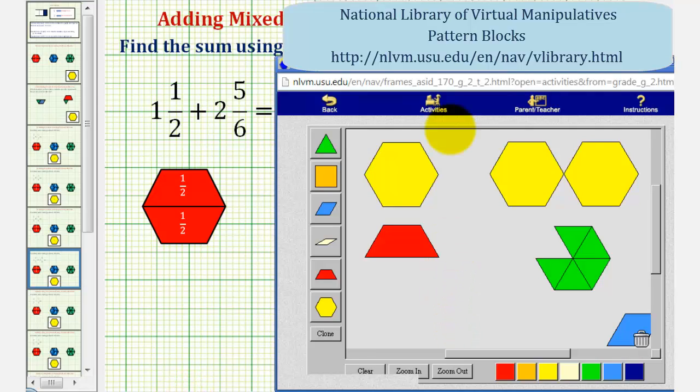So we'll represent one and a half using one yellow pattern block and one red pattern block. Here's one and a half. And for two and five-sixths, we'll use two yellow pattern blocks for two. And for five-sixths, we'll use five green pattern blocks.